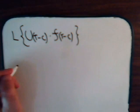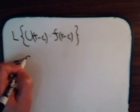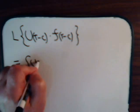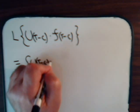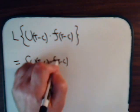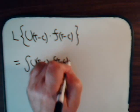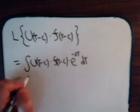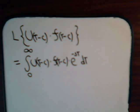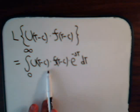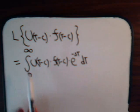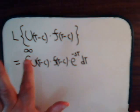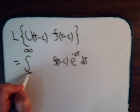Once again we just use the definition of a Laplace transform. It will be the integral of u(t-c) times f(t-c) times e to the minus st dt, where t goes from 0 to infinity. We realize this is going to be 0 whenever t is less than c, and after that it equals 1. So we can rewrite the integral with t going from c to infinity.